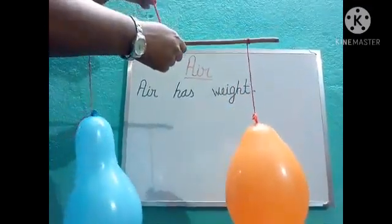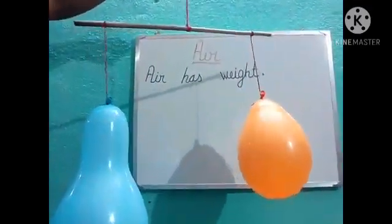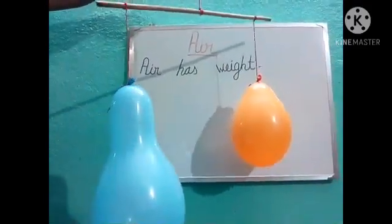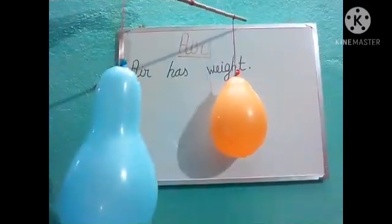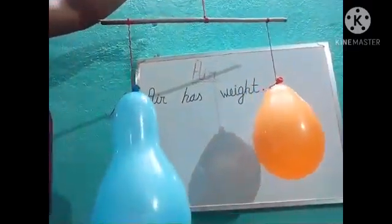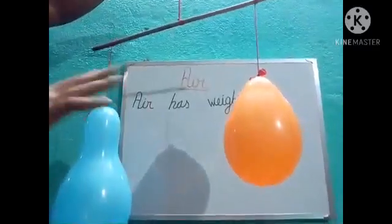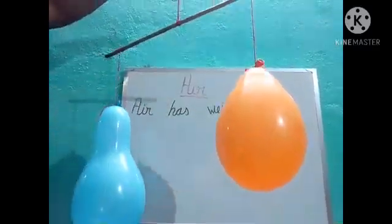Like this you will tie the thread with the stick at two ends and here one more thread to hold the stick like this. Now see here that the stick is straight. That means both sides have equal weight.